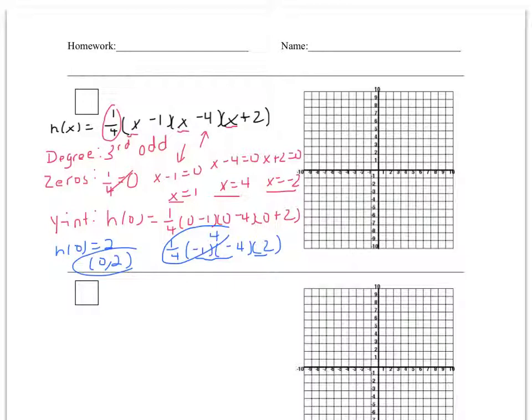Now let's graph the function. So I'm going to graph my y-intercept at 0, 2. Also I'm going to graph my zeros at x equals 1, x equals 4, and x equals negative 2.